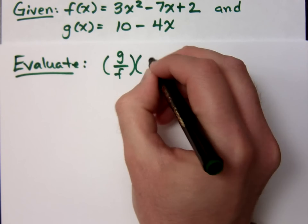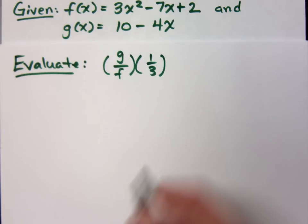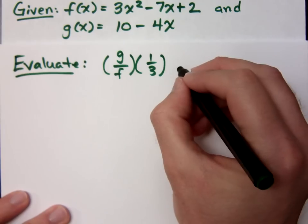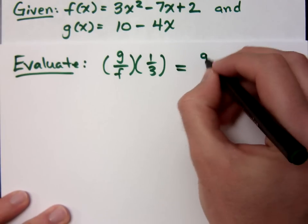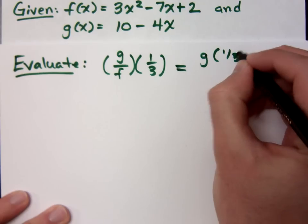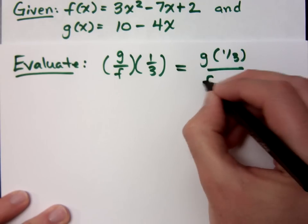How about g over f of 1/3? What does this mean? Divide f into g of 1/3 divided by f of 1/3. Right, g of 1/3 divided by f of 1/3.